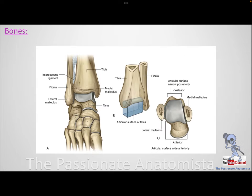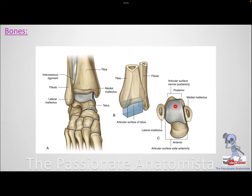These bones form joints. At the distal end of the tibia and fibula, the articular surface articulates with the talus — specifically the trochlea of the talus. Trochlea means something is sliding or rotating over it, like a pulley. This is the part that helps the talus rotate under the tibia during dorsiflexion and plantar flexion at the ankle joint.